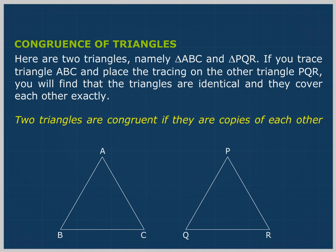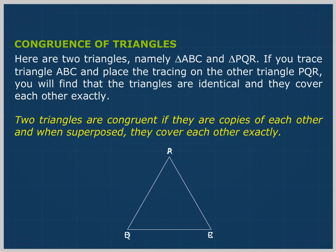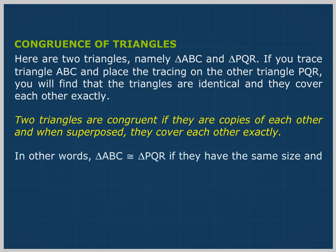Two triangles are congruent if they are the exact copies of each other and when superposed, they cover each other exactly. In other words, triangle ABC is congruent to triangle PQR if they have exactly the same size and shape.